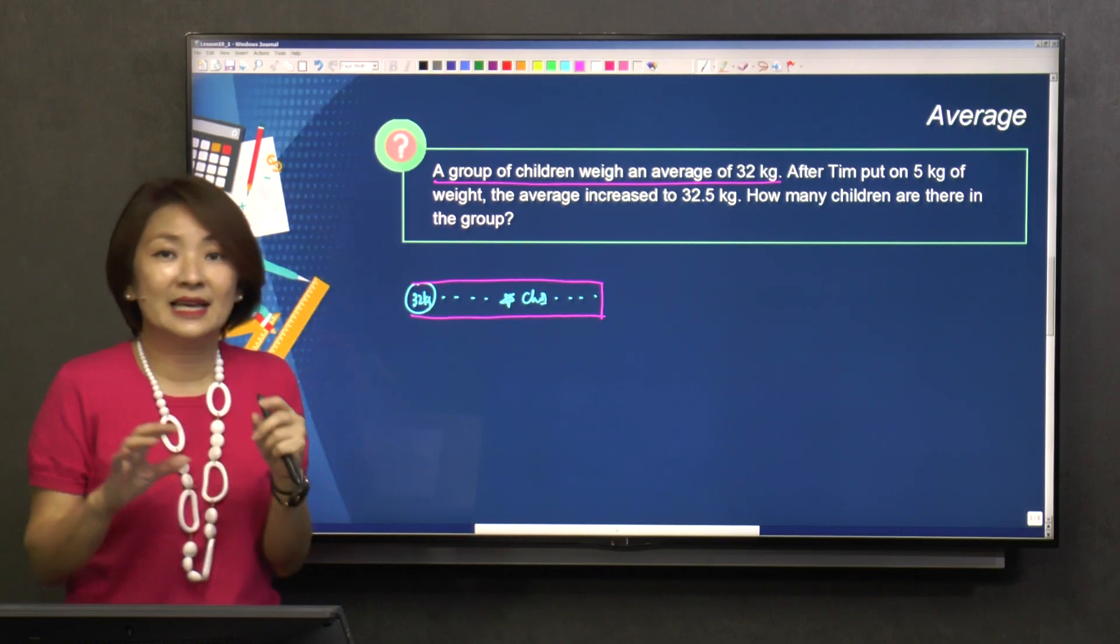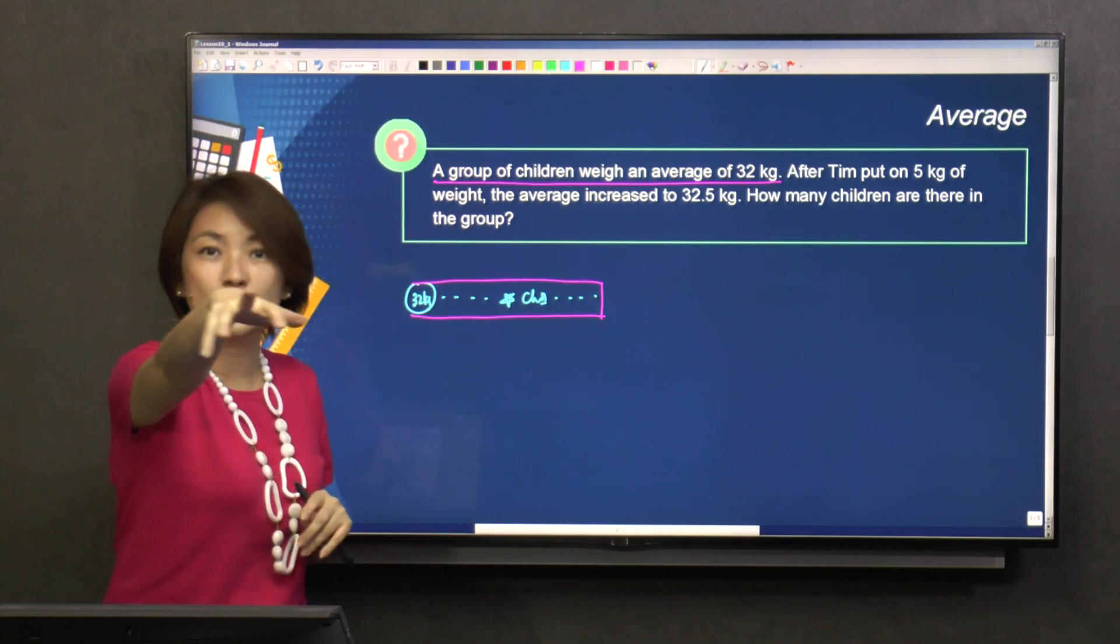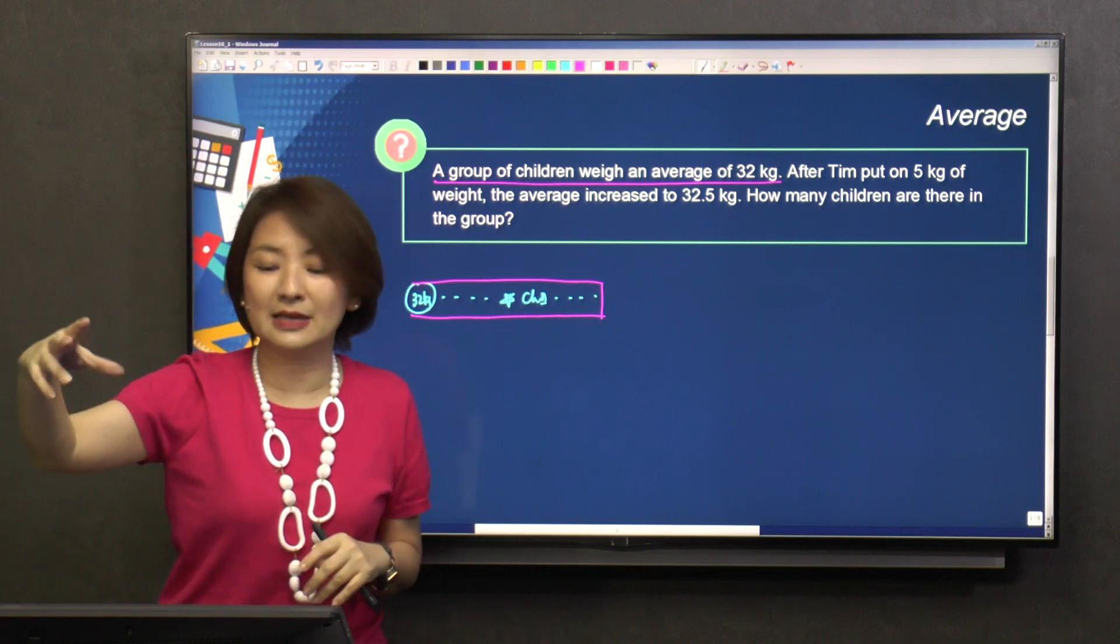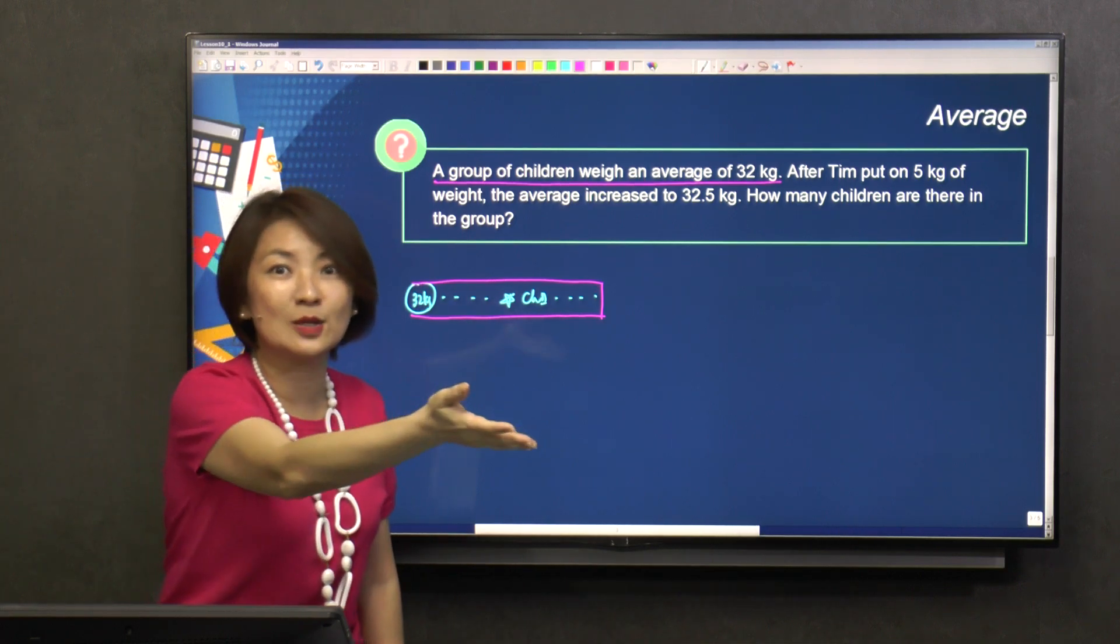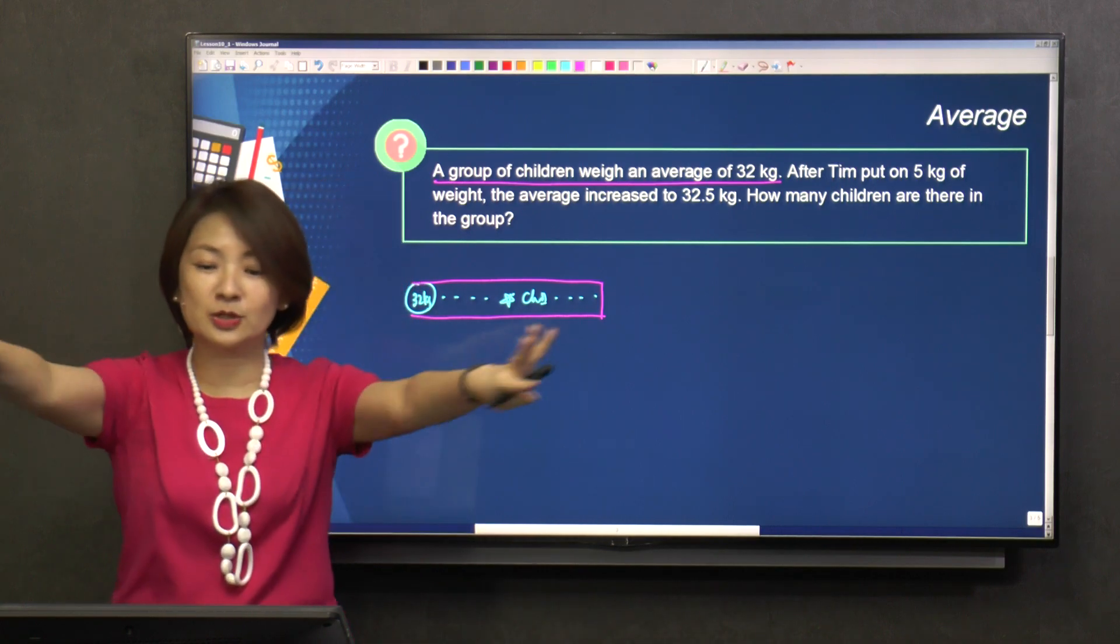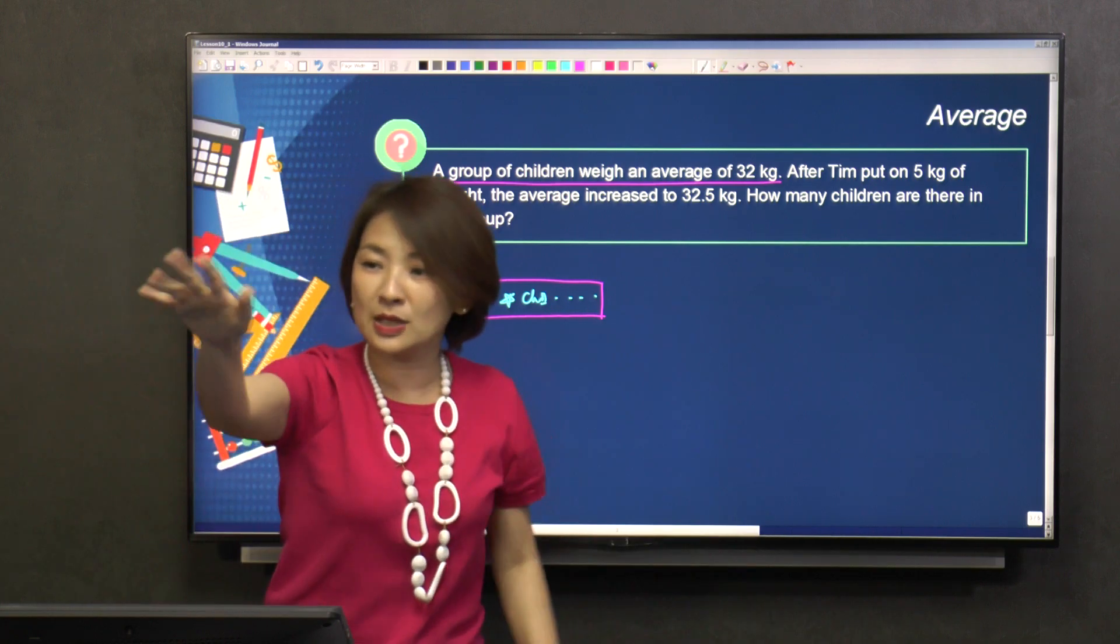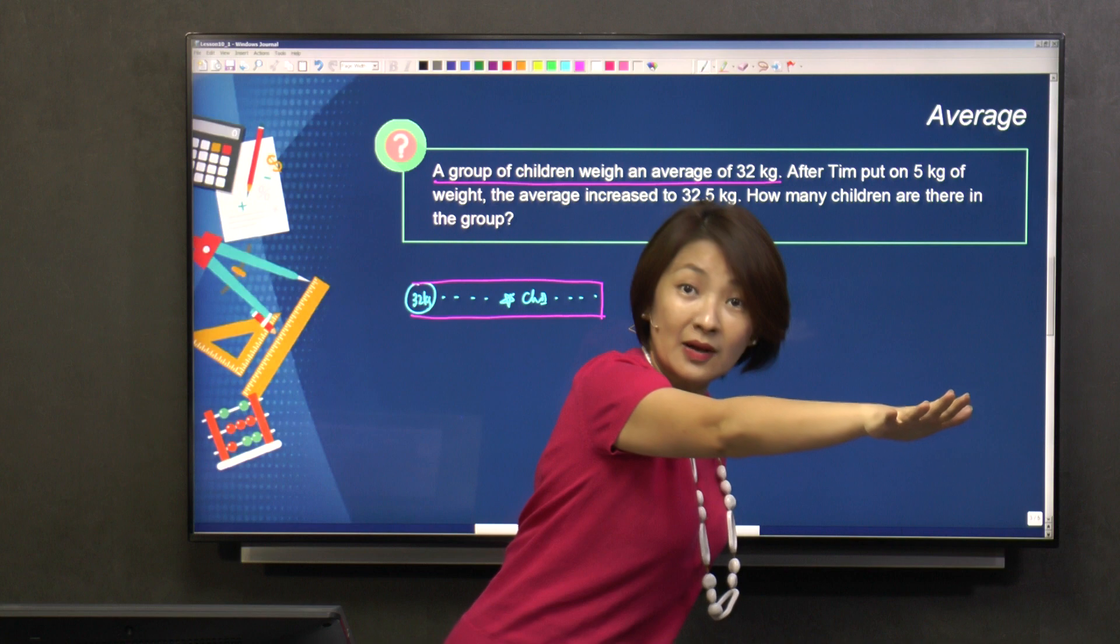He is like, you're a magician. You are redistributing the weight. If I have a group of children, some will be 20 kilograms, some will be 50 kilograms, all mixed up. But I'm doing the redistribution. Now everybody is 32 kilograms. 32, 32, 32, 32, 32. And Tim is also 32 kilograms.